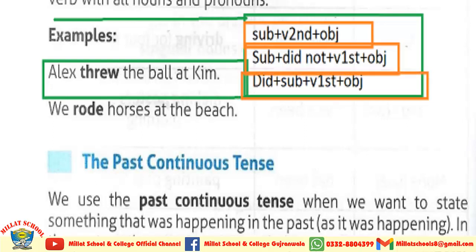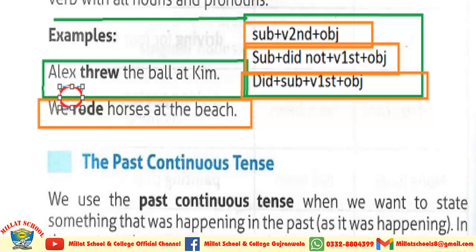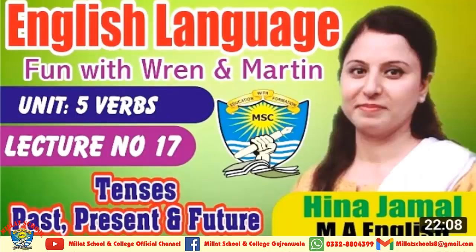Example: 'We rode horses at the beach.' Here 'we' is the subject, 'rode' is the second form of the verb, and 'horses' is the object. When we convert this affirmative sentence into negative, we add 'did not' and convert the second form into the first form. When converting into interrogative, we put the helping verb 'did' at the start and convert the second form into the first form.